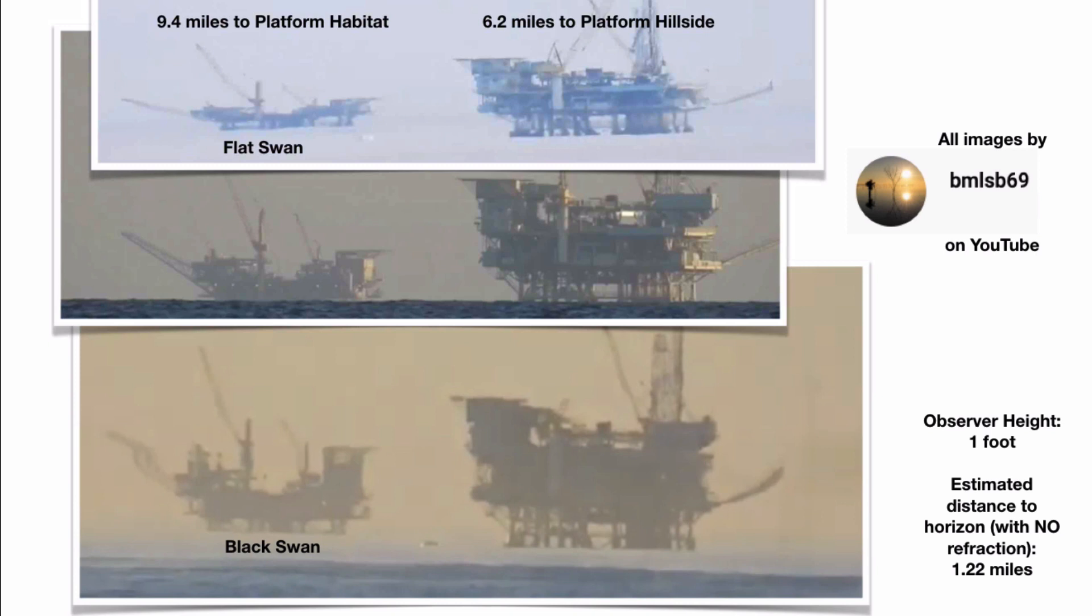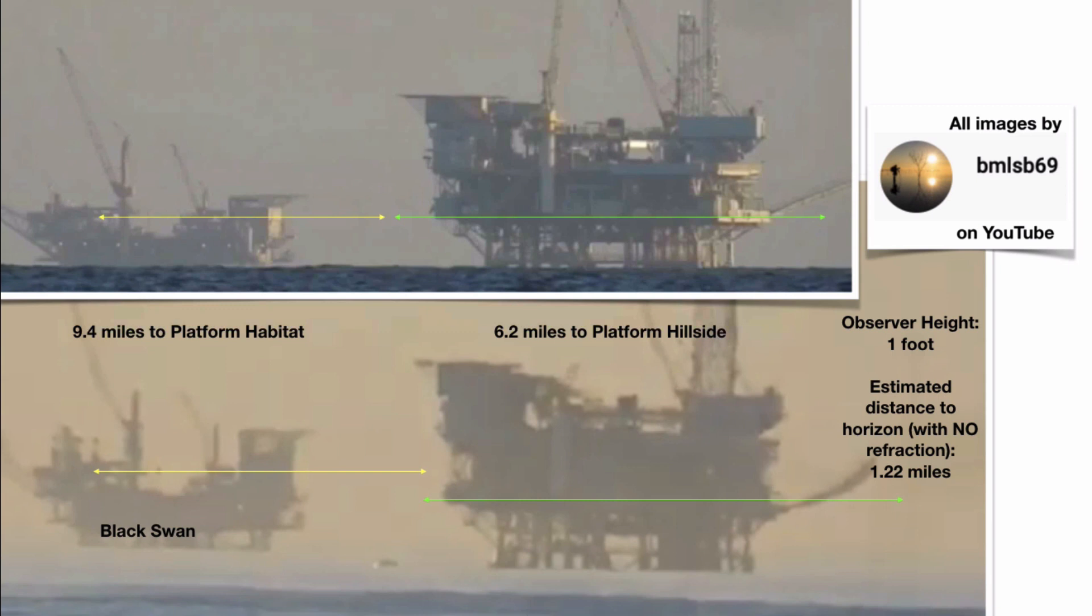So it does indicate that there is significant distortion and refraction going on in that bottom image. And one of the things about atmospheric refraction is that it bends light rays downwards. So let's take a look at these two platforms. The image in the middle shows very little distortion. The image at the bottom is the black swan image. And if atmospheric refraction bends light downward, that means distant objects appear higher than they actually are. In other words, their apparent image is higher than their actual geometric location.